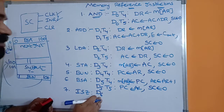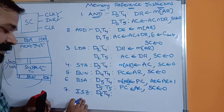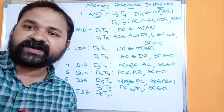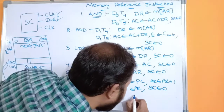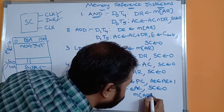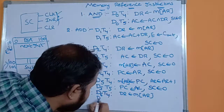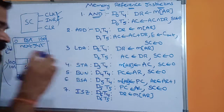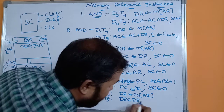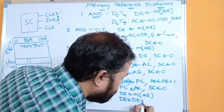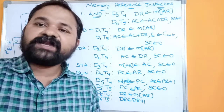ISZ is executed when decoder output D6 is active, and the first timing signal is T4. Since we can't increment memory directly, at T4 we transfer the contents of memory to the data register. With clock pulse and increment enabled, the next timing signal becomes D6T5. At T5 we enable the increment control input of the data register — because the data register has load, clear, and increment control inputs.